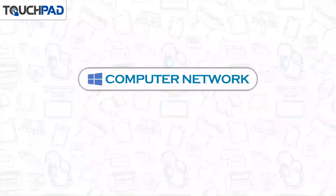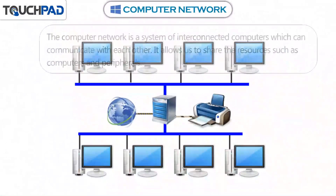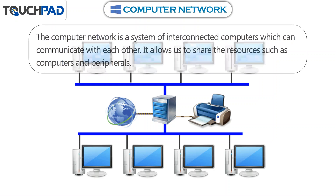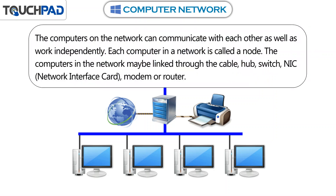Computer Network. The computer network is a system of interconnected computers which can communicate with each other. It allows us to share the resources such as computers and peripherals. The computers on the network can communicate with each other as well as work independently.